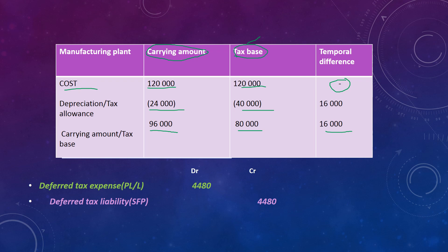It is clear that a provision has to be made in the current year for the tax payable in the future because we have a liability. Using a tax rate of 28%, 28% of $16,000 gives us $4,480. We are going to debit that to the tax expense and also credit that to the deferred tax liability for the same amount. This is so that we can make a provision for the tax that is payable in the future.